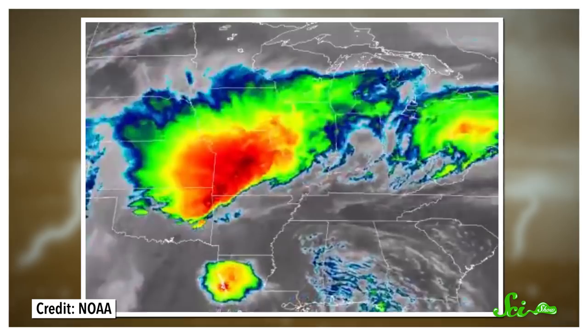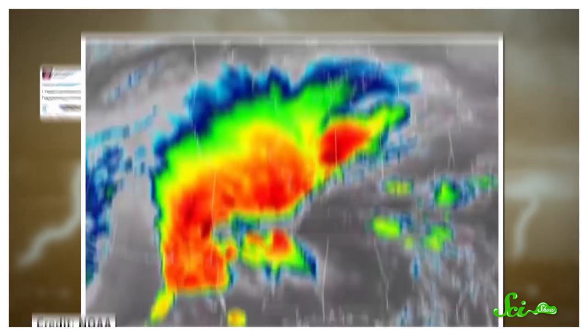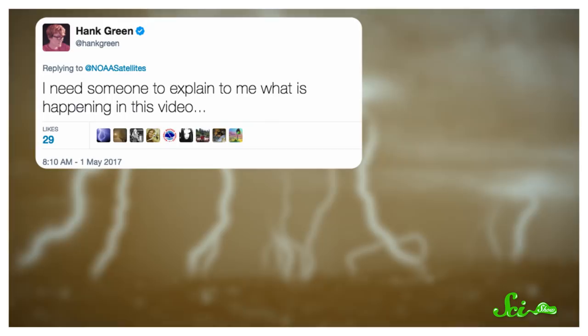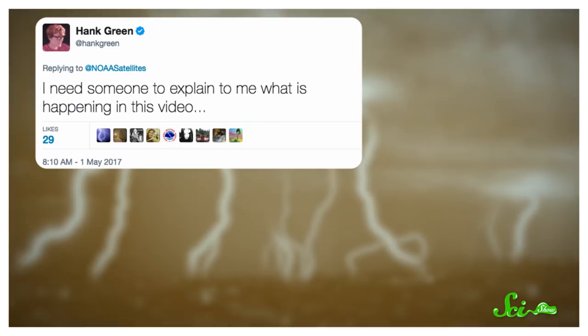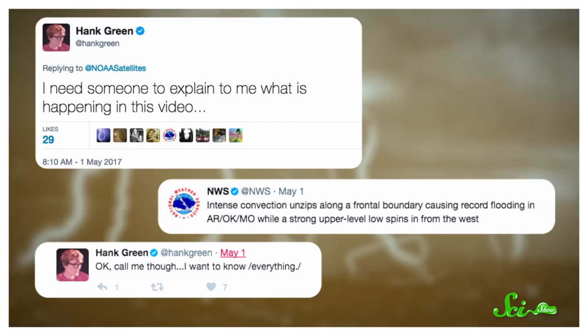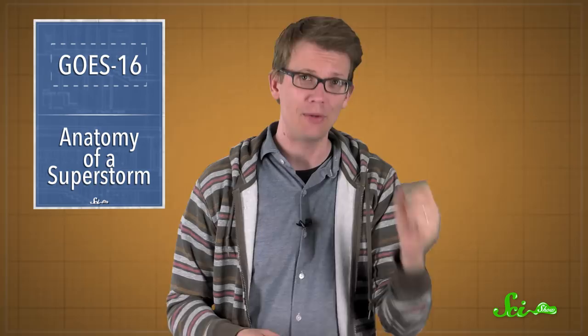It showed the thunderstorm's formation and movement across the US, and I was like, wow — that is very cool and a little bit unlike any satellite image I've ever seen of a storm. I wrote a note to the National Weather Service saying I wanted to know everything about this storm's formation, and they wrote me back, gave them my phone number, and they called me. Here's why that satellite animation looks so impressive, and how it shows the perfect combination of factors that led to those devastating storms.